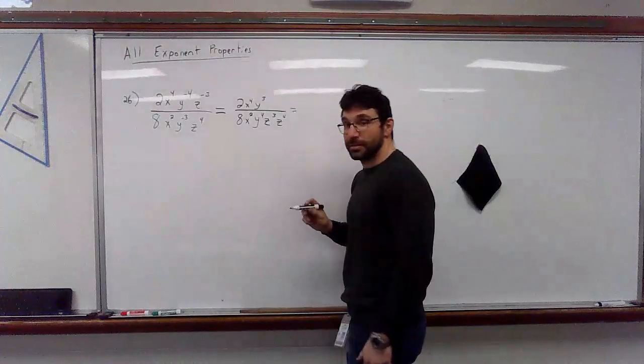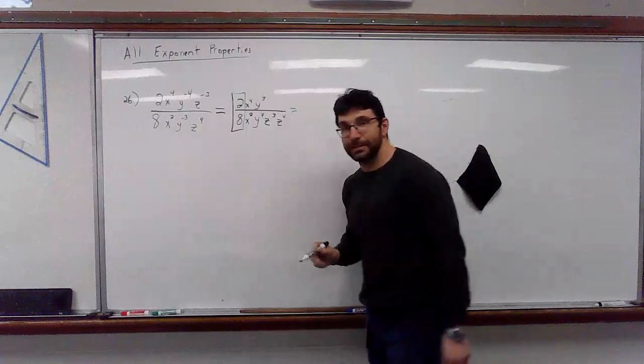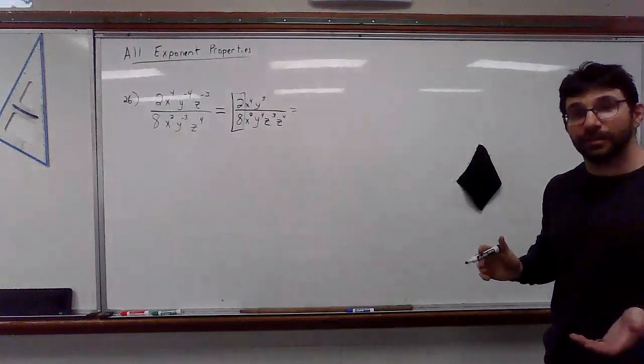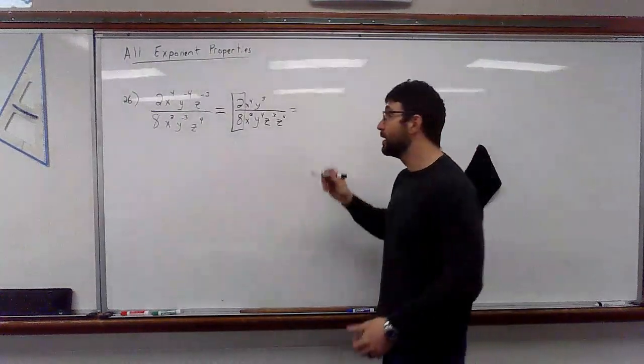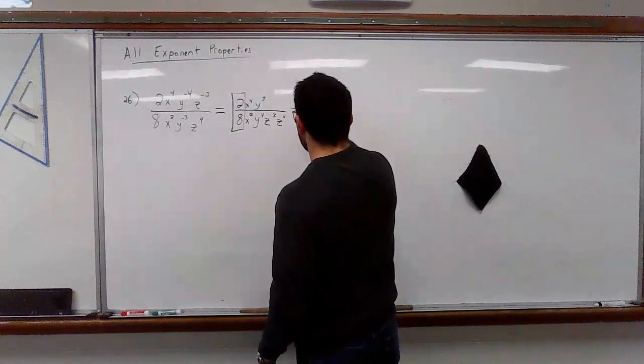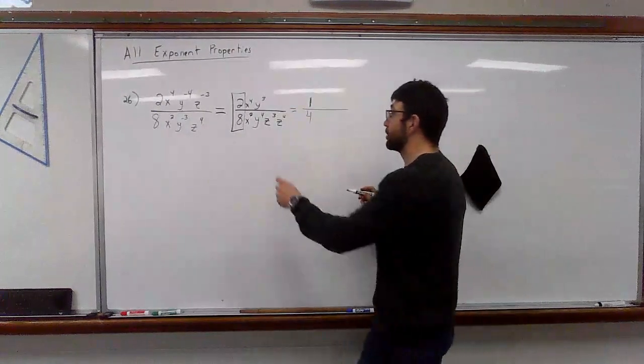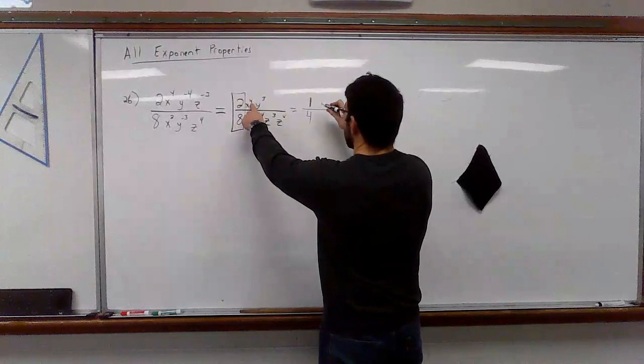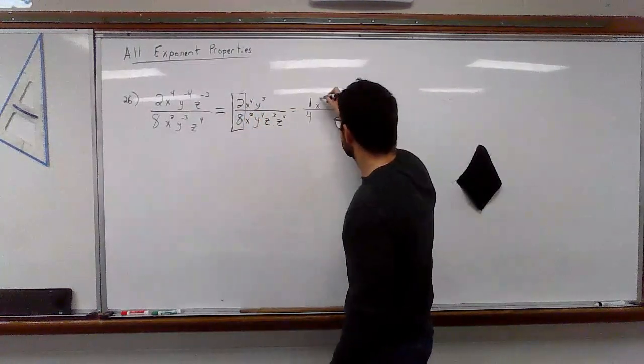So, now let's start to simplify. I'm going to look at just two divided by eight. Those are the coefficients that we can still divide. So, put in your calculator two divided by eight. You should get 0.25. We don't want that. We want the fraction. It's one-fourth. So, two divided by eight simplifies to one-fourth. Okay. Now, I'm looking at my X's. Numerator denominator. So, that means I look for my larger exponent, which is the numerator, and I subtract. Four minus two is two.